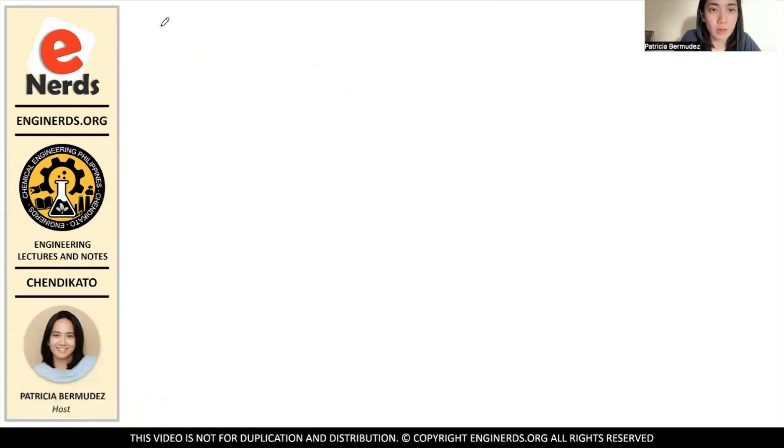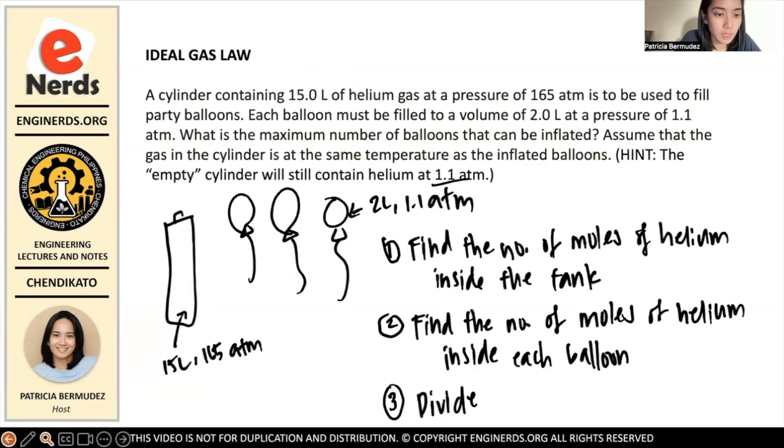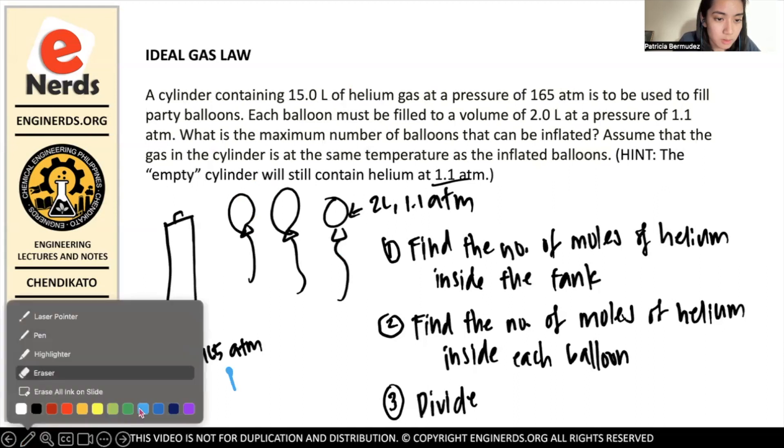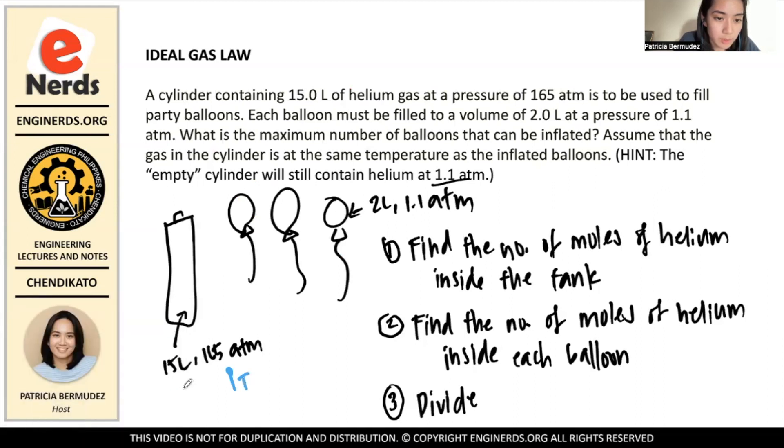So, how do we account for the number of moles? We use PV equals nRT. So, for the tank, first, we have the tank. This is the PT of the tank. And then, this one is the volume of the tank. But actually, I have to minus 1.1 here. And then, this one is the volume of the balloon. And then, this one is the pressure of the balloon. Just for reference.